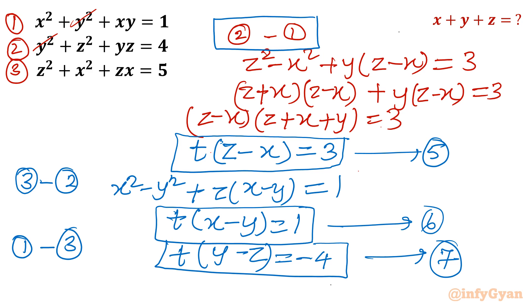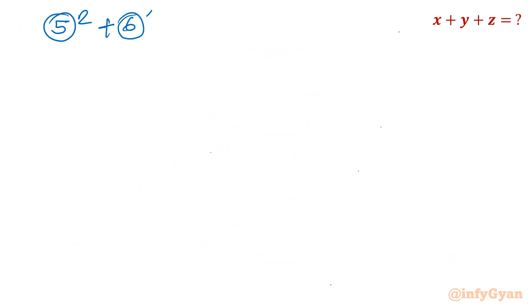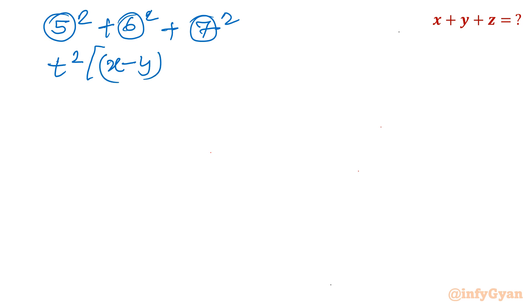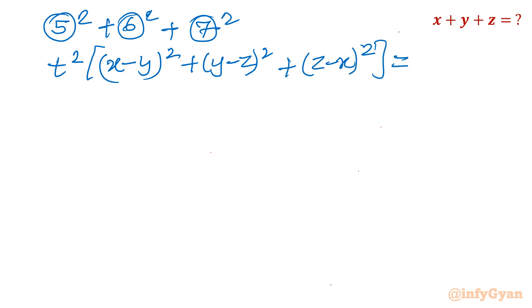Now I will consider equations 5², 6², and 7² — squaring and adding the three equations 5, 6, and 7. I get t² overall common, in bracket: (x minus y)² plus (y minus z)² plus (z minus x)² equals the right-hand side, which is 3² plus 1² plus (minus 4)² — that is 9 plus 1 plus 16 — equals 26.